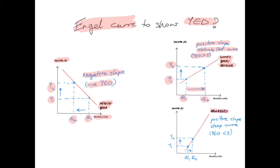Necessities will also have a positive slope because they are normal goods, but they will have a relatively steep curve. This is because the value of YED is less than one. As you can see, when income rises from Y1 to Y2, quantity demanded rises by a very small, proportionately small amount, compared to the percentage change in income.